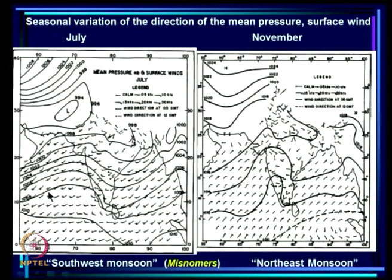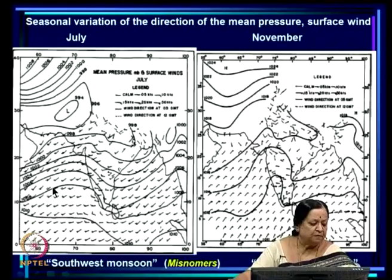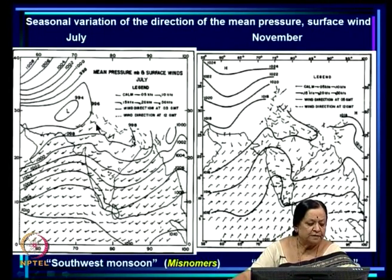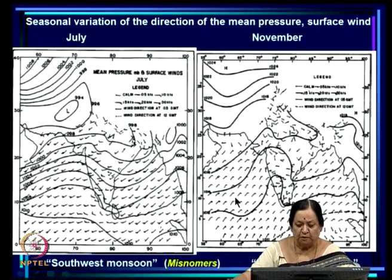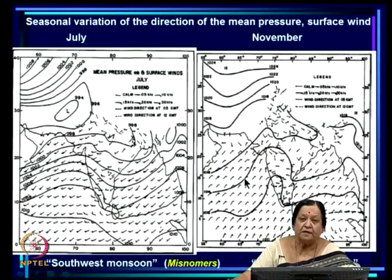Imagine holding an umbrella with the handle here and the tip of the umbrella there — the wind blows from handle to tip, and how strong the wind is determined by how many teeth are drawn on the handle. What you see basically is that the direction of the wind reverses: in July it is blowing from the southwest, and in November it is blowing from the northeast. This seasonal reversal of winds is really the basis of the definition of monsoon — the original traditional definition — and it is because these winds are from the southwest during summer monsoon that this is called the southwest monsoon season.